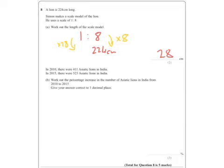Now the second one says in 2010 there were 411 Asiatic lions in India. 2015 there were 523. Work out the percentage increase.